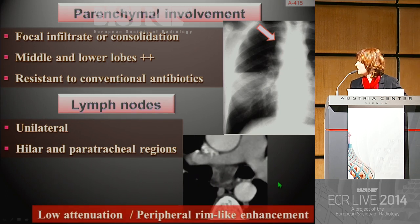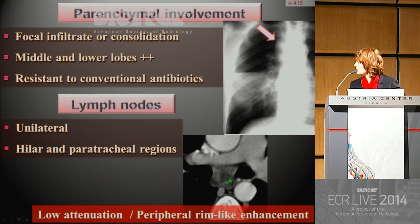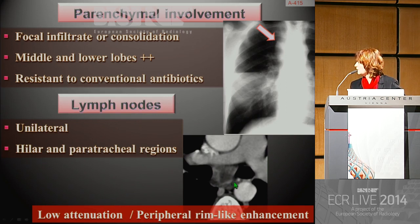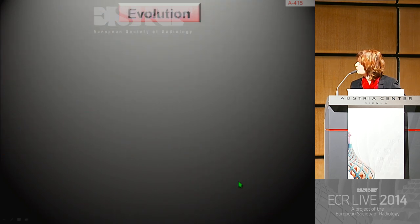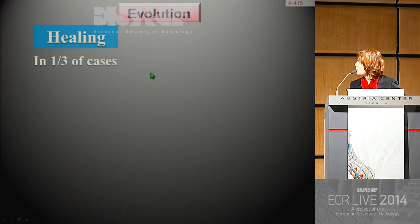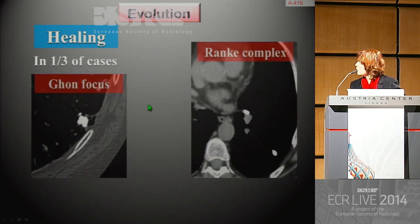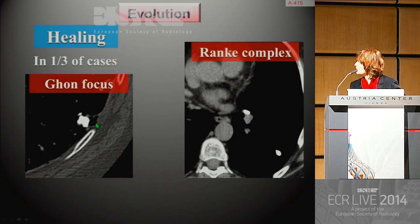Typically with CT, after contrast administration, there is a central low attenuation corresponding to necrosis, and a peripheral rim-like enhancement corresponding to the vascular rim of the inflammatory granulomatous reaction. In most cases there are no sequelae. In one third of cases, we can observe calcified granulomas that may be associated with regional calcified lymph nodes.